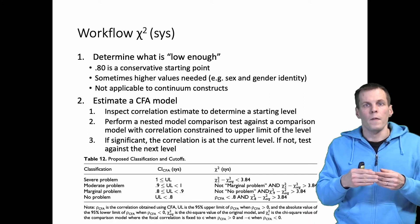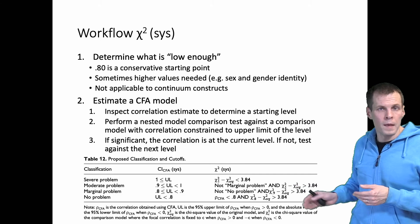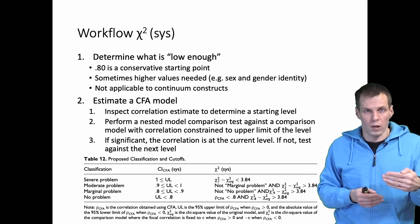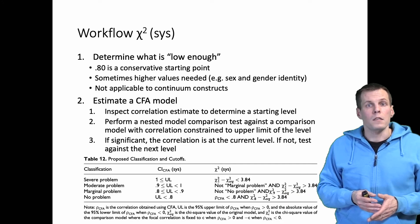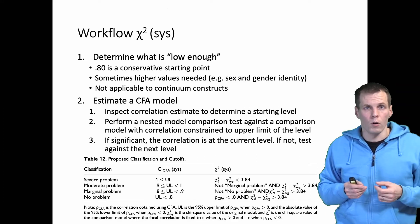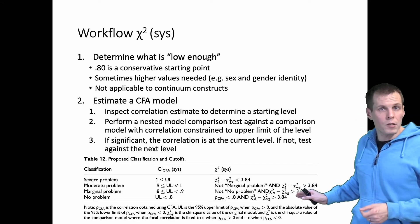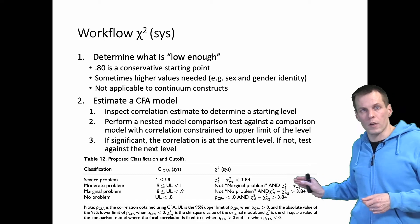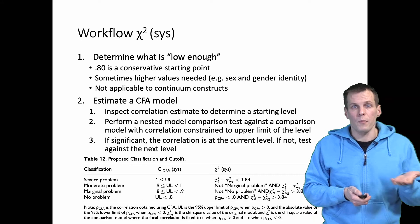We compare the original model and the constrained model. If the difference is not statistically significant, we move that correlation to the higher level — in this case from marginal problem to moderate problem. Then we test the next level. We know the correlation is at least a moderate level problem, so we test against the cutoff of 1, which is the cutoff for severe problem. If the model where the correlation is constrained to 1 fits worse than the unconstrained model, we conclude that the correct level is moderate problem. We do this for every correlation, which requires some effort but can be automated.